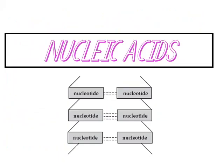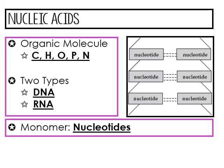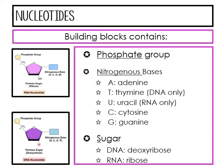Now that we've covered proteins, let's talk about nucleic acids. Nucleic acids have one more element added to the organic molecule — carbon, hydrogen, oxygen, phosphorus, and nitrogen. There are two types of nucleic acids, DNA and RNA, and the monomer is a nucleotide. Nucleotides are made up of three building blocks: a phosphate group, a nitrogenous base, and a sugar. You can remember this with PBS — phosphate, base, sugar.